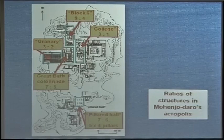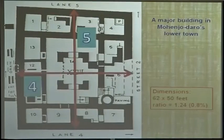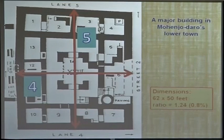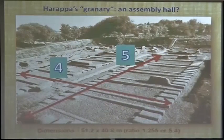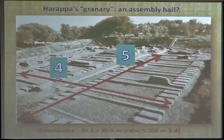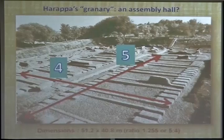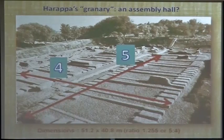In the lower town of Mohenjo-daro we find a building where the proportions are almost exactly 1.25 — that is, 5 to 4 — and you will find this 5 to 4 in many unexpected places. This is the largest building in the entire Harappan civilization, measuring a little over 50 meters by a little over 40. Nobody really knows what it was used for — it was earlier called a granary, but more recent suggestions propose it may have been an assembly hall. What we do know is that the dimensions again give us 1.25, so something is clearly going on.